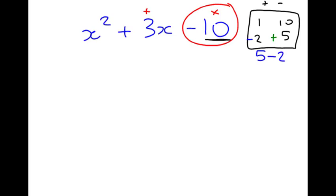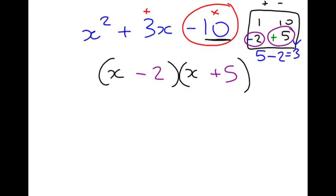How about a plus 5 and a minus 2? Yeah, 5 take away 2 equals 3. So, we've got it. We write our brackets out, x, x, and the numbers that go in are minus 2 and plus 5. I'll do another one with negatives.